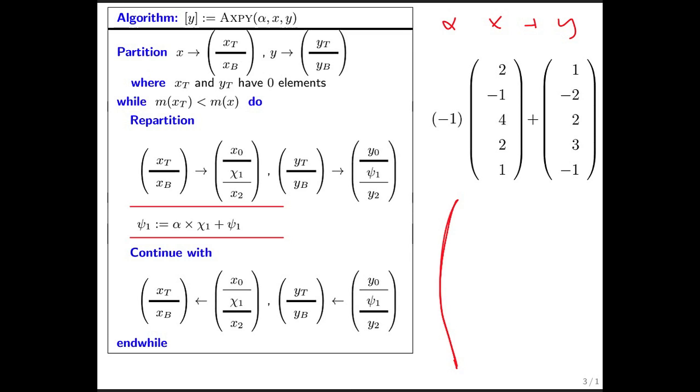So let's start by writing down here what is in y when we get started. When we enter the algorithm, we partition the vectors into a top part and a bottom part where the top part has no components. And let's also partition the result vector y in the same way so we can keep track of things.